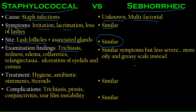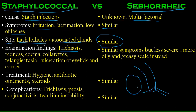Trichiasis is when a faulty eyelash, instead of pointing outward, points toward the inside and rubs against the cornea and conjunctiva, causing irritation. When the eyelid is inflamed in staphylococcal blepharitis, some hairs may twist inward, producing trichiasis. You will also find redness, edema, and collarettes.